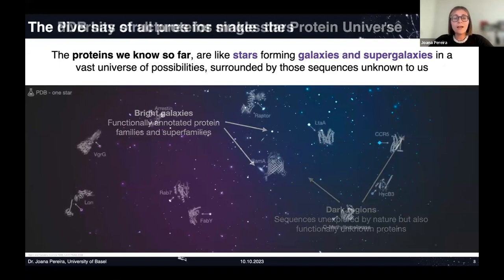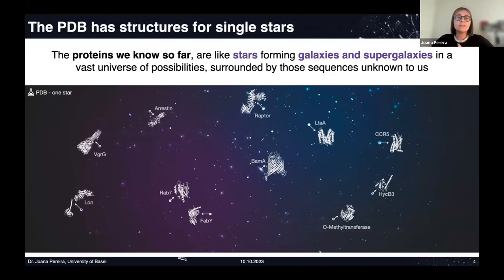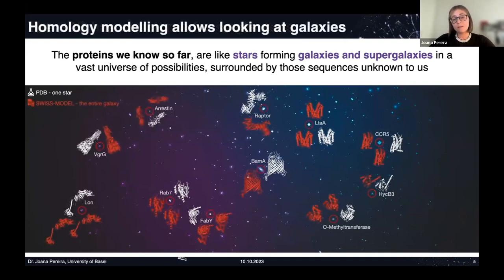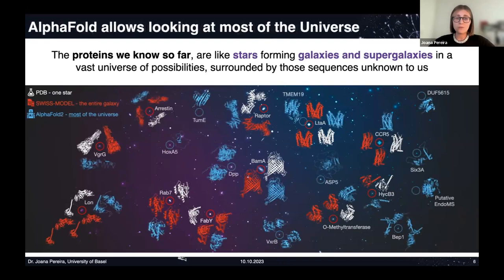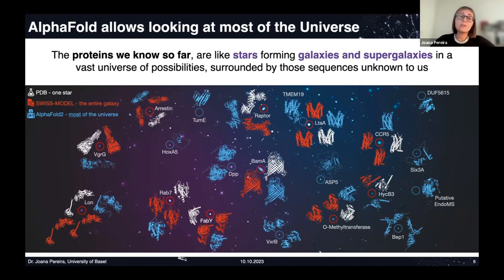Structural information in the PDB represents some of those galaxies, and this can be expanded using homology modeling. Thanks to AlphaFold, we now have predicted structures for most of the space represented in UniProt — covering galaxies with existing PDB structures, those reachable by homology modeling, and, we hope, regions in the dark areas where we didn't even know a galaxy existed.